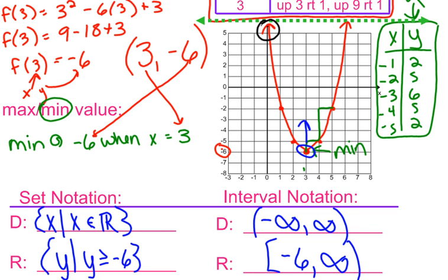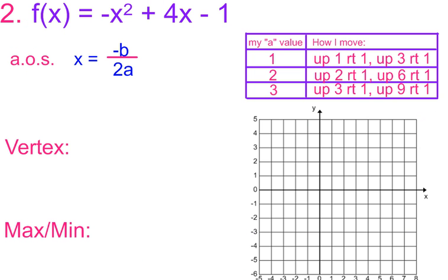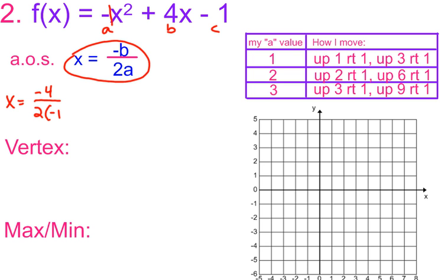Let's try number 2: f(x) = -x² + 4x - 1. The first thing I do is find my axis of symmetry. My a is -1, b is 4, and c is -1. Substituting into x = -b/(2a): x = -4 / (2 × -1) = -4 / -2, so x = 2.